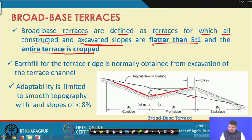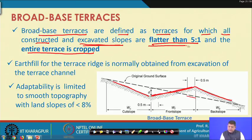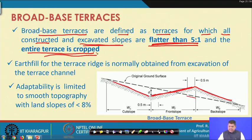There are ridges, a channel, and a refined ridge. These are constructed slopes. The excavated slopes and constructed slopes are all kept flatter than 5 to 1, which is very important, so that the entire terrace can be utilized for agricultural cropping or agricultural production.